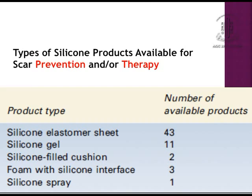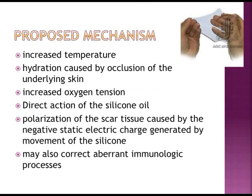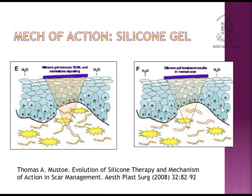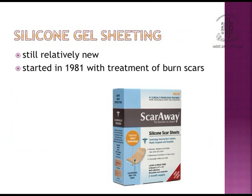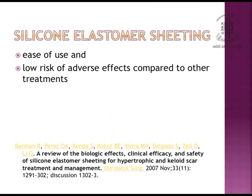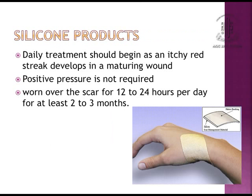The most commonly used method nowadays is the silicon elastomer sheet. Silicon also comes not only as a sheet but also as a gel, cushion, foam with silicon interface, and silicon sprays. The proposed mechanisms include increased temperature, hydration caused by occlusion of the underlying skin, increased oxygen tension, direct action of the silicon oil on the skin, polarization of the scar tissue, and correction of aberrant immunologic processes — thus reducing scar formation by decreasing cytokine release from keratinocytes. It is a relatively new method with low risk of adverse effects. Silicon products should be worn over the scar for 12 to 24 hours per day for at least 2 to 3 months, and positive pressure is not required.